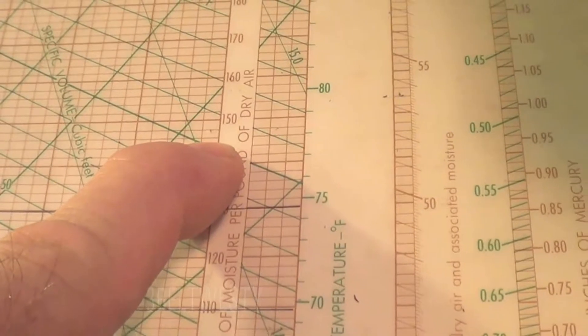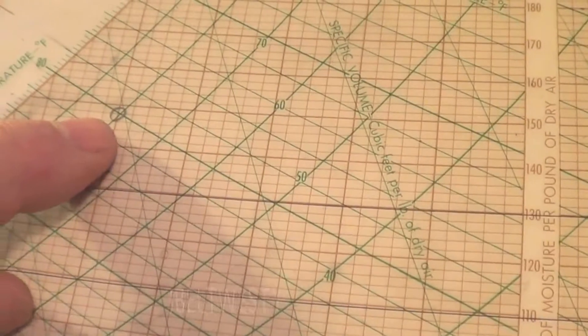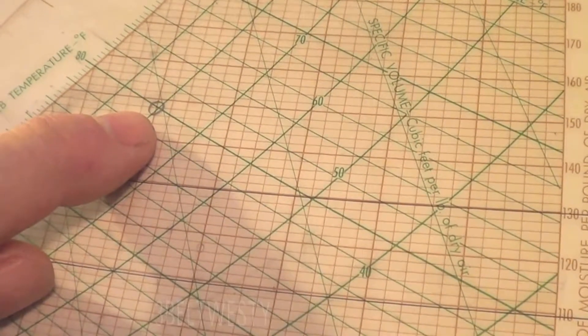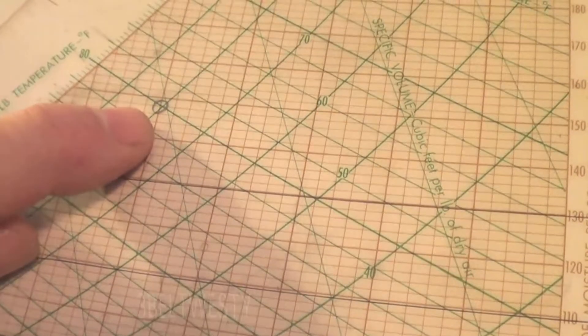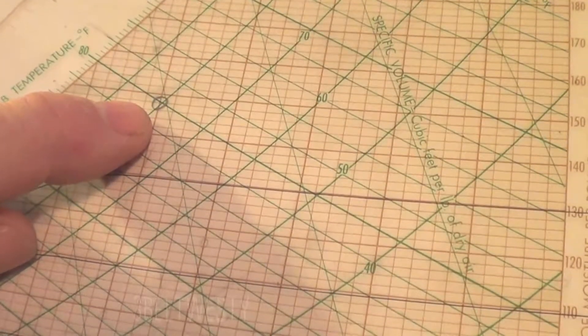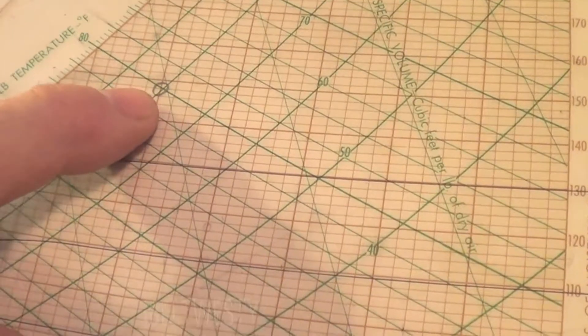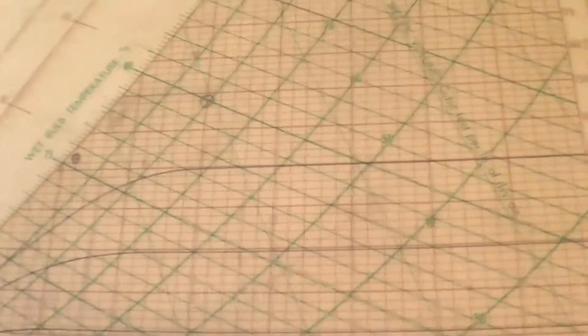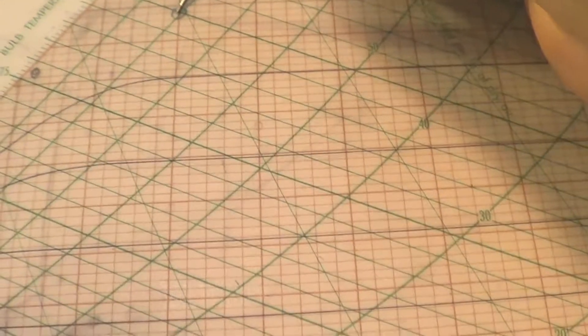Now the reason a swamp cooler doesn't really work here is that if you take this air at 85 dry bulb and 80% humidity, what a swamp cooler will do is, if the water is supplied at the same temperature as wet bulb at 80...